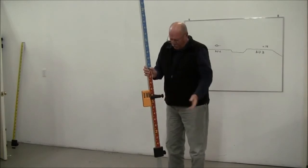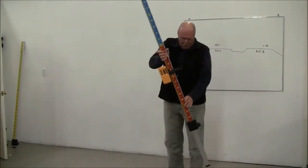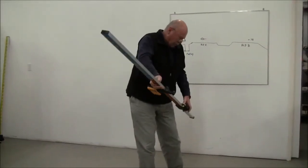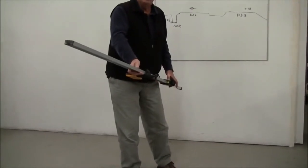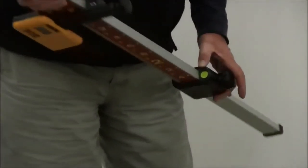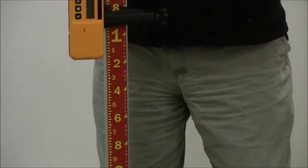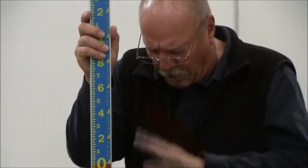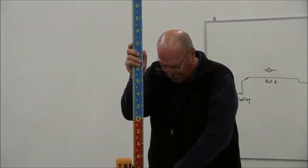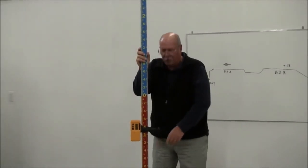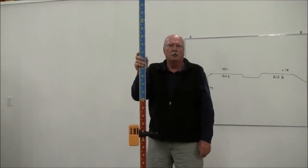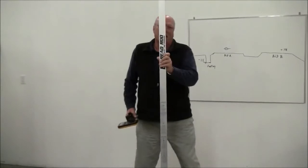One of the features you might notice is it has a bullseye bubble built into the grade rod. So if you're doing concrete work or something where you really want to be precise in terms of your elevation, you can make sure that your rod's exactly plumb and you're going to be more accurate that way.